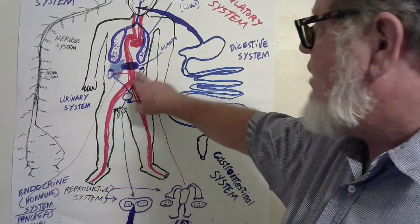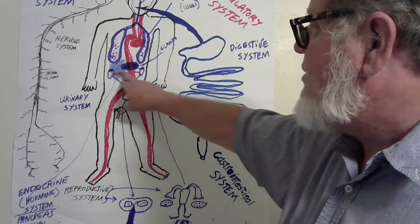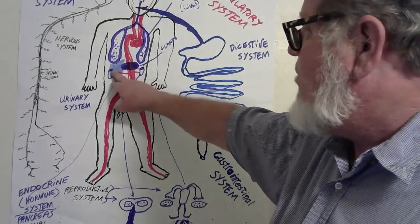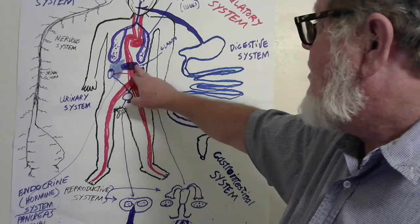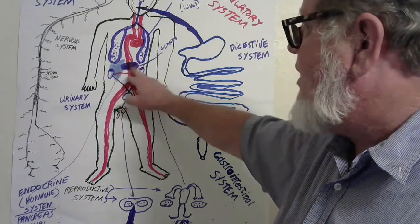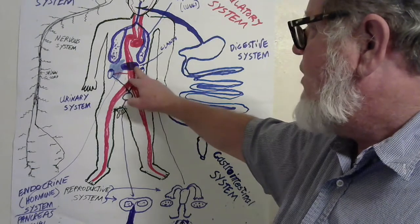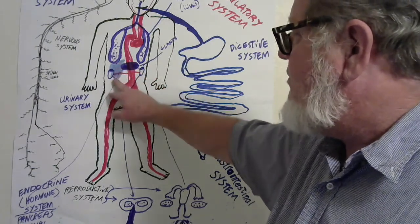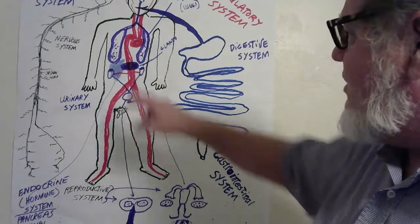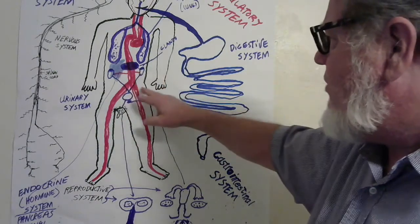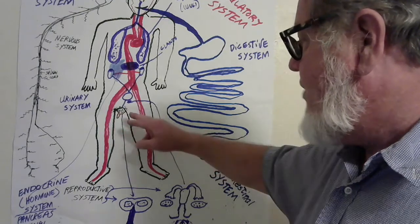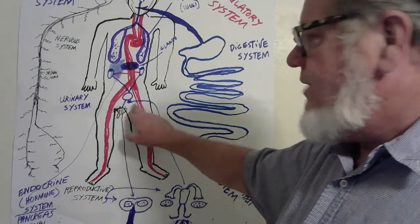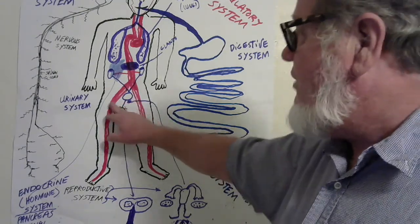The adrenal glands on top of the kidneys are part of our endocrine system. The pancreas behind our stomach is part of our endocrine system. The liver secretes hormones, the pancreas secretes hormones, the testes secrete hormones, and in women, the ovaries also secrete hormones.